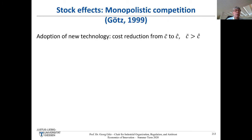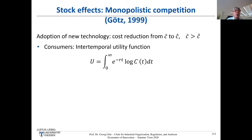The starting point of this model is a cost reduction: firms can adopt the new technology, which reduces their marginal cost from C-bar to C-hat. We have consumers with an intertemporal utility function. Adoption of a new technology is a dynamic problem, which should be familiar from your macroeconomics class.